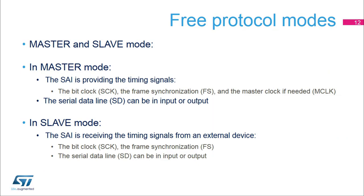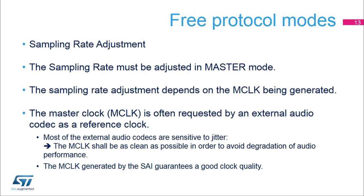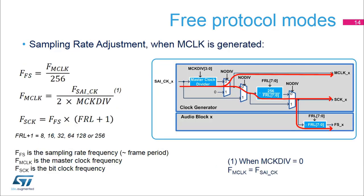In master mode, the SAI can generate the master clock, MCLK, or use an external master clock via SAI-EXTCLK pads. The master clock can be used to provide a reference clock to the external audio codec. In slave mode, the MCLK signal is not used. In master mode, it is up to the SAI to generate the timing in order to provide the correct sampling rate. In slave mode, the sampling rate is provided by the external audio device.